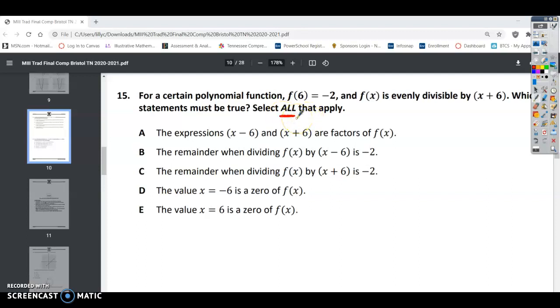All right, so we know that we can have multiple answers, and we know that this is evenly divisible. That means this is a factor of said polynomial, whatever that polynomial is. So we can first determine that x plus 6 is a factor, and I'm just going through what I know before I even look at my answer choices here.